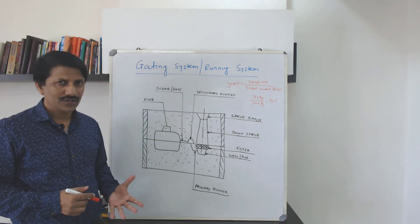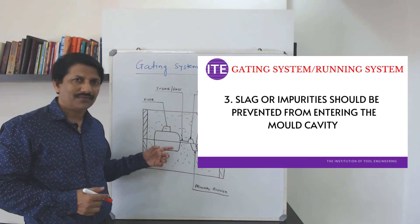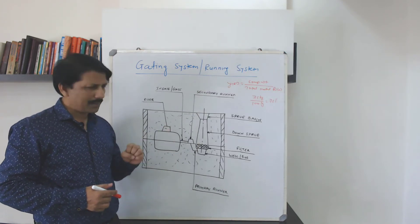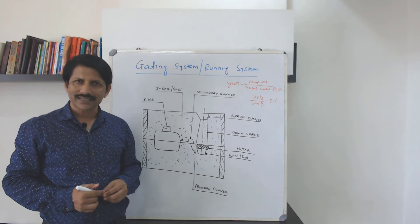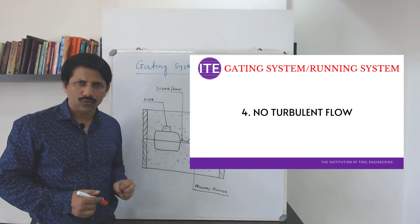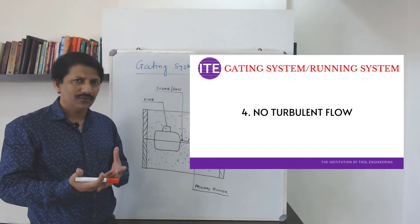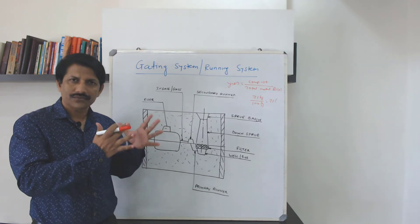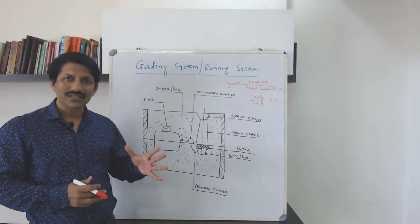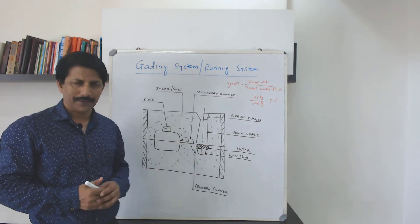The next consideration is that slag and impurities should be prevented from entering the mold cavity. One more requirement is that there should not be any turbulent flow. Because of turbulent flow, there are chances of air and gas entrapment, causing dangerous defects like blow holes and porosity.